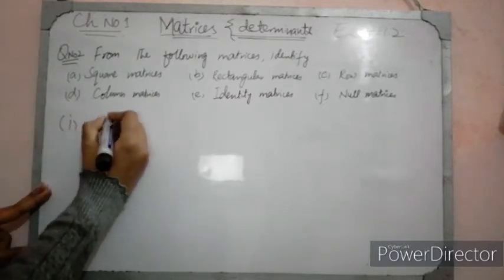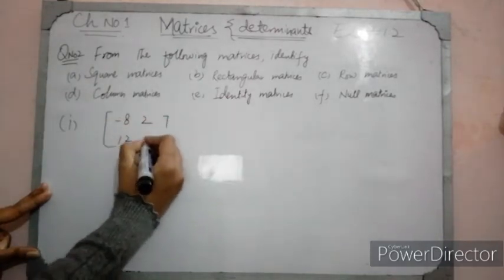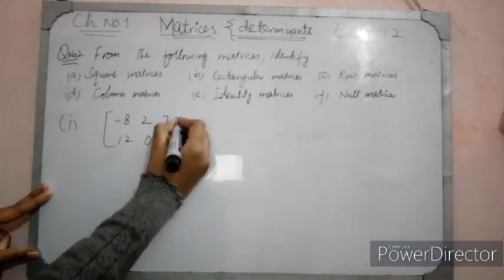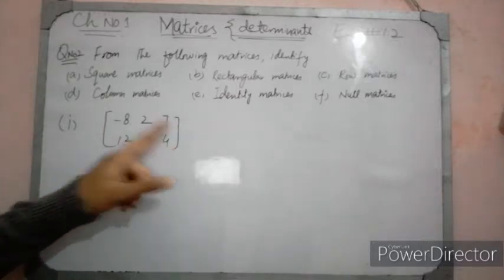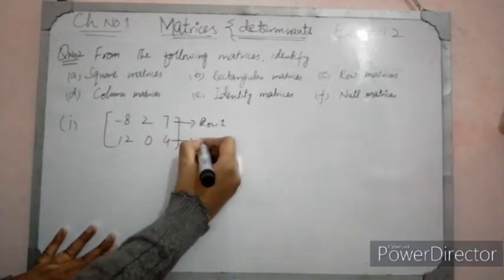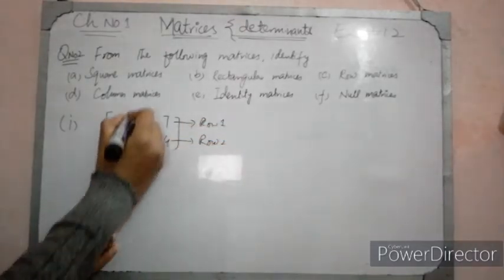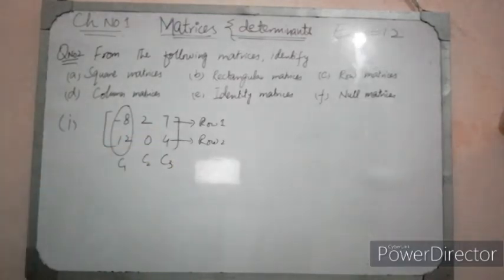Question number 2, first part: we have a matrix with entries minus 8, 2, 7, 12, 0, and 4. We have to tell which type this matrix is. For a square matrix, the number of rows must equal the number of columns. Here the number of rows is 2 and the number of columns is C1, C2, C3 — that is 3. So rows and columns are not equal, therefore it is not a square matrix.